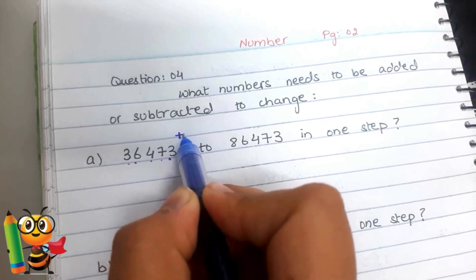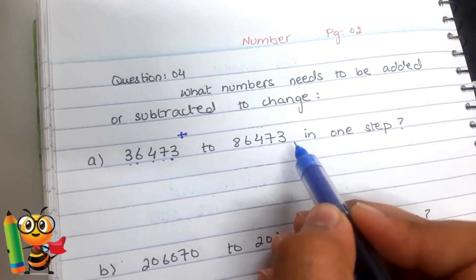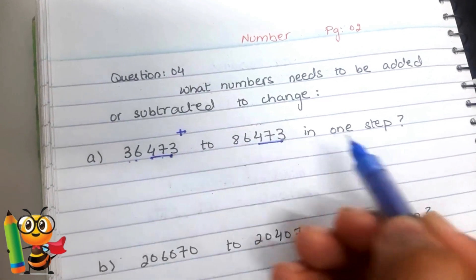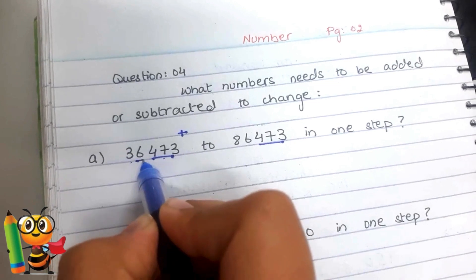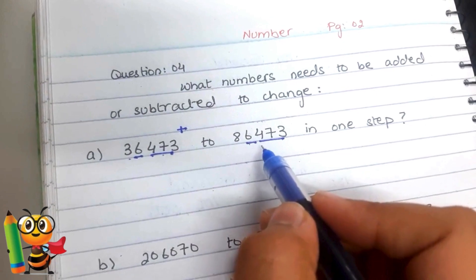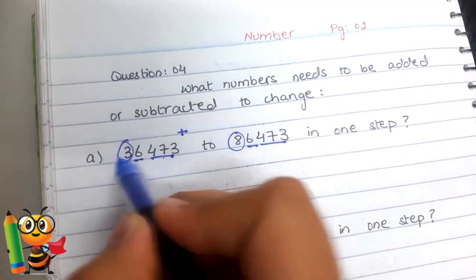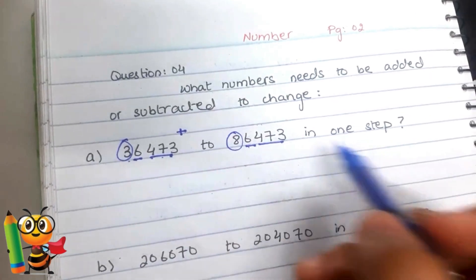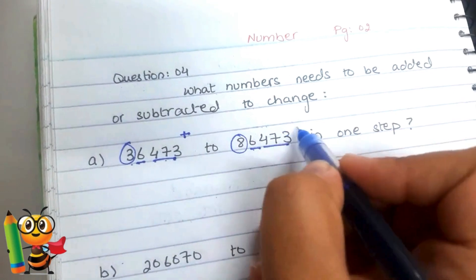Since the target number is bigger, it means we need to add something to 36473 to change it into 86473. To figure out what we are going to add, first note that the last digits 473 are the same — no changes there. The digit at the thousands place, 6, is also the same. The difference is between the 8 and the 3, so we need to assign them their place values for our recap: units, tens, hundreds, thousands, and ten-thousands.